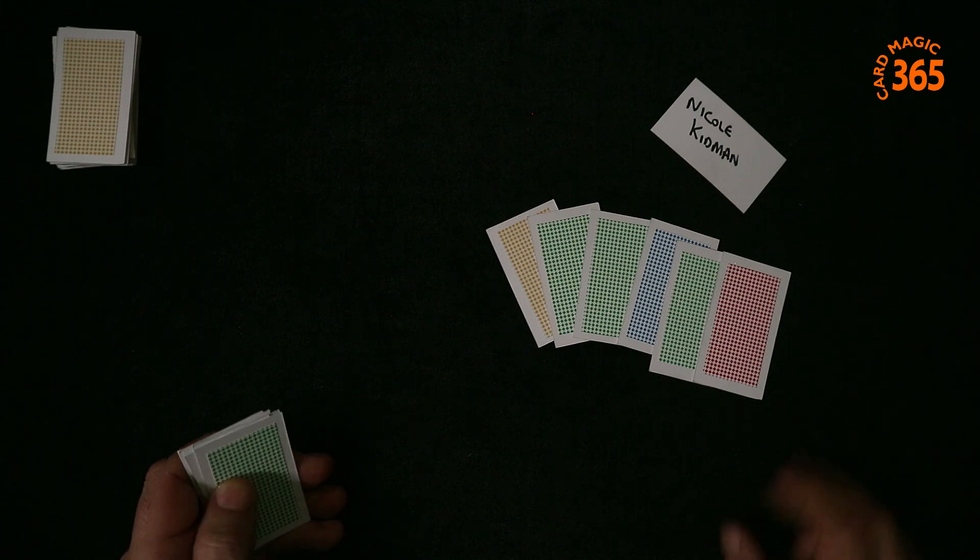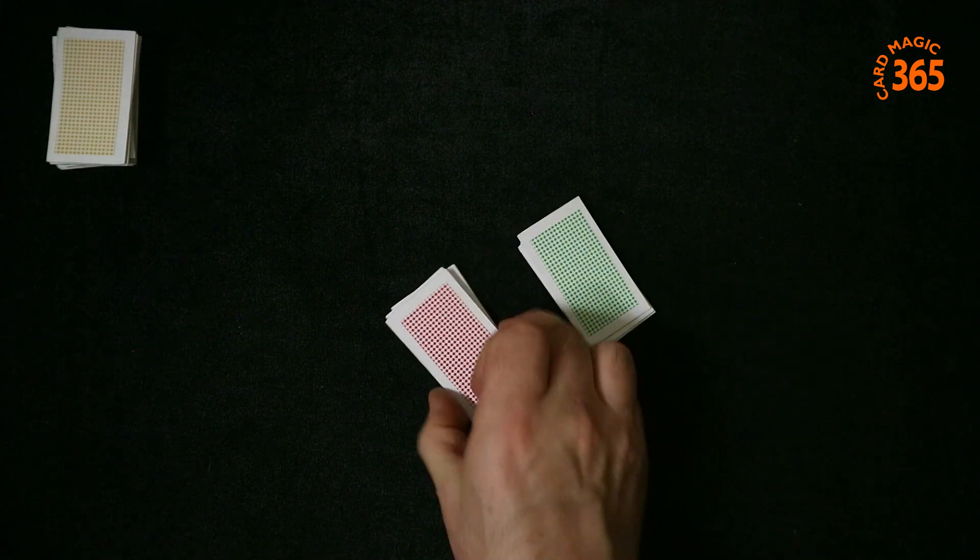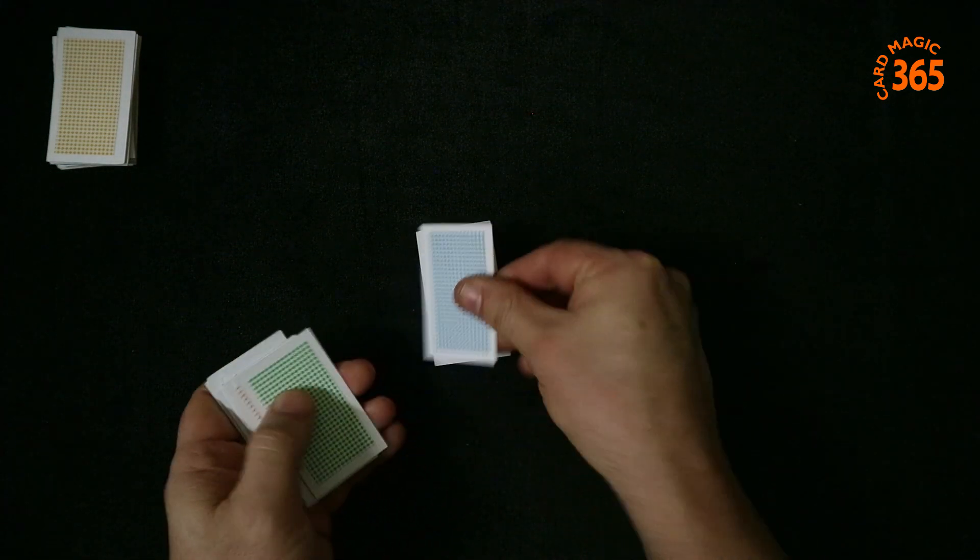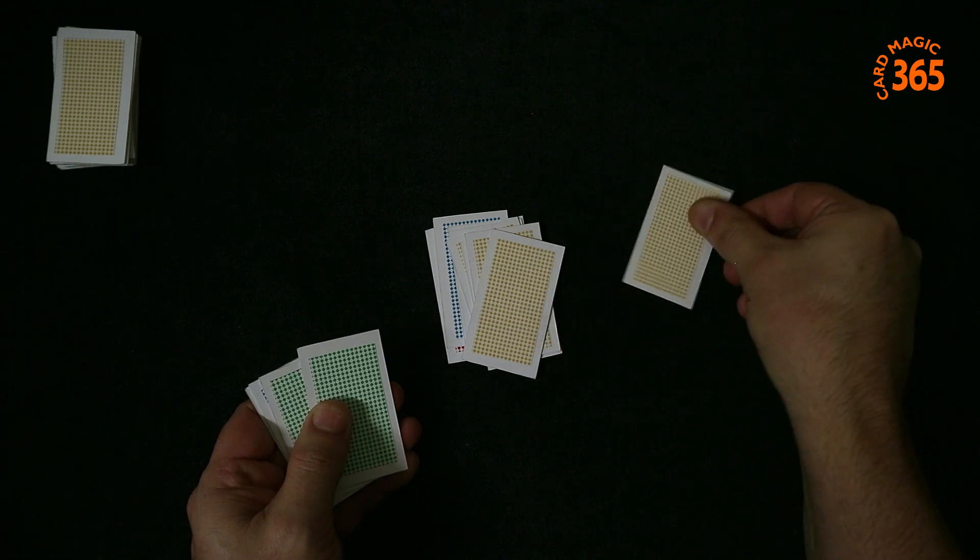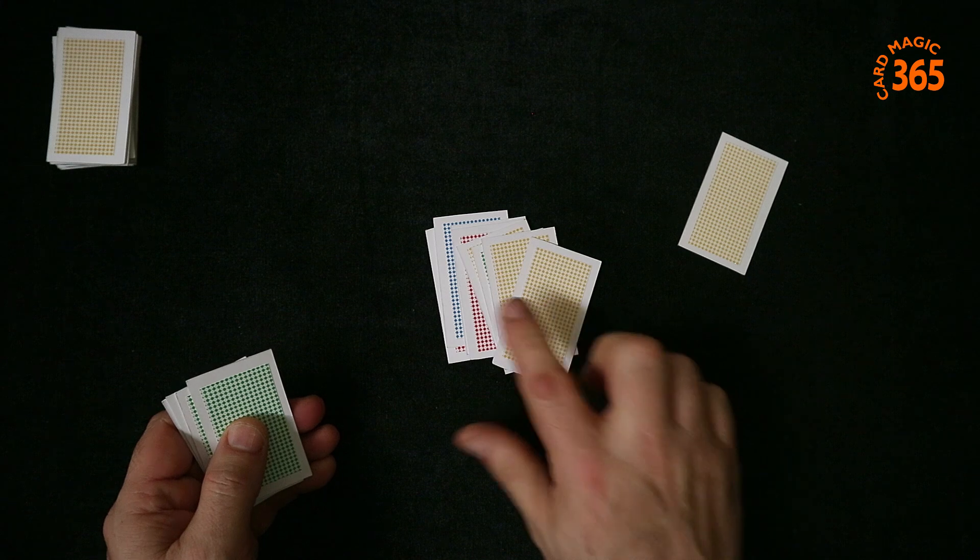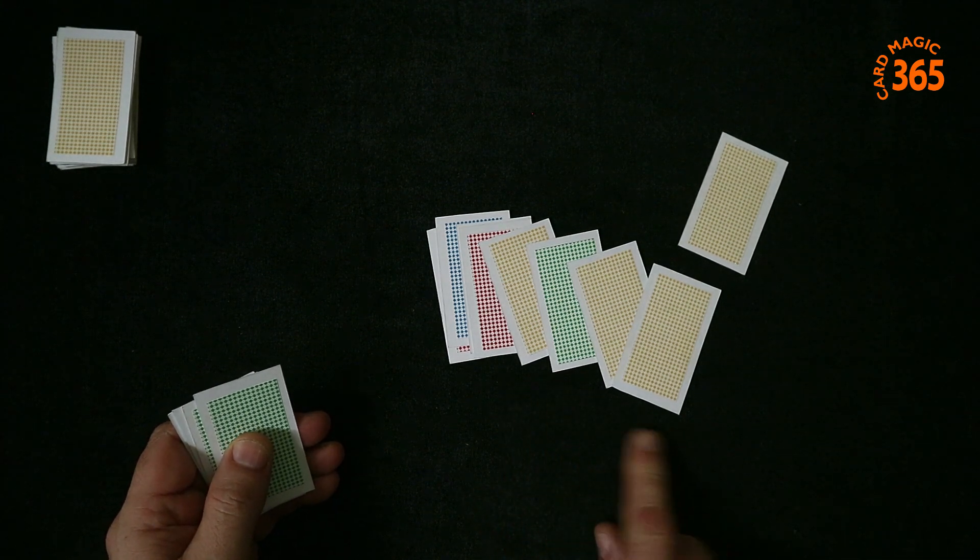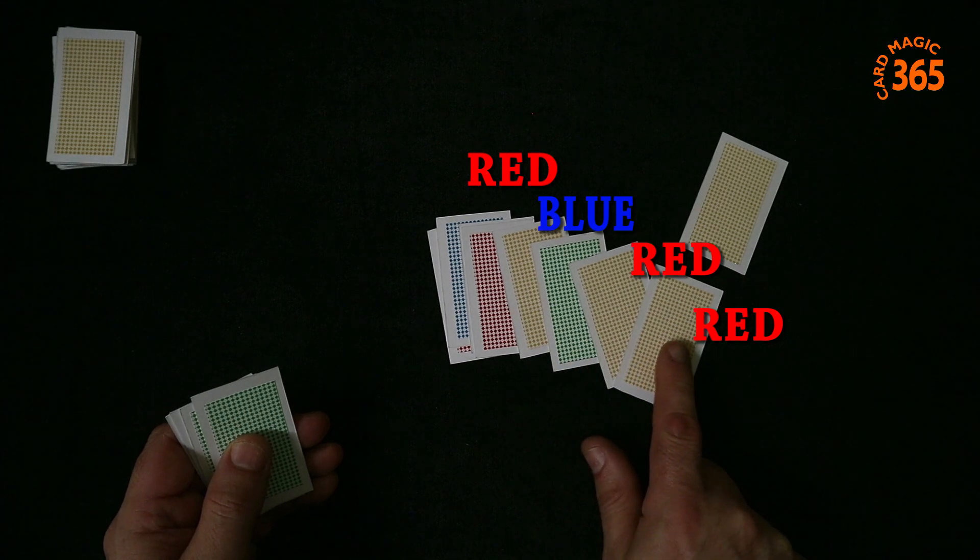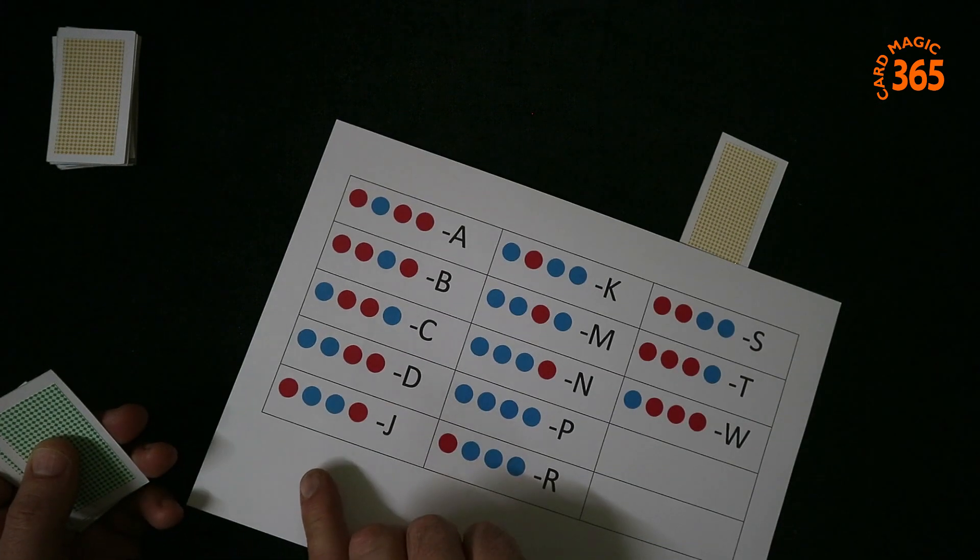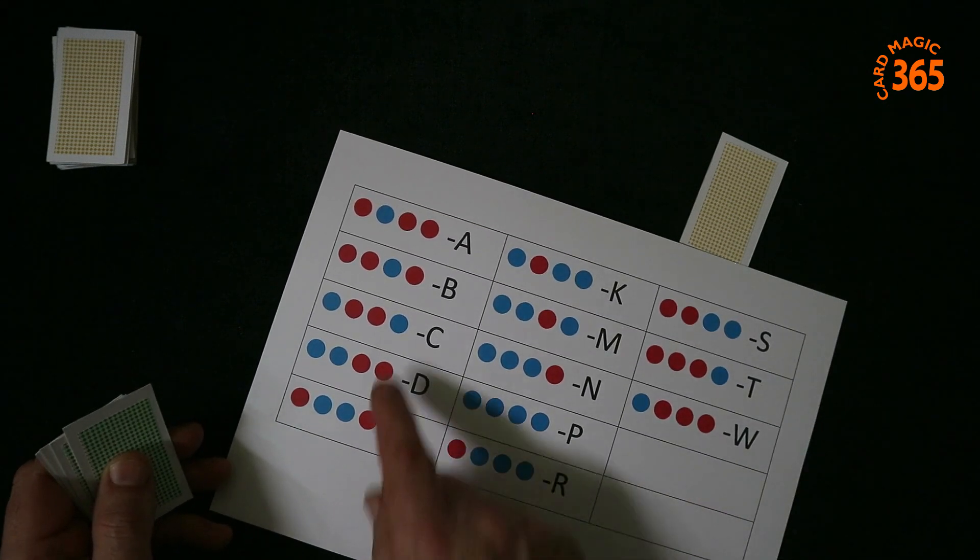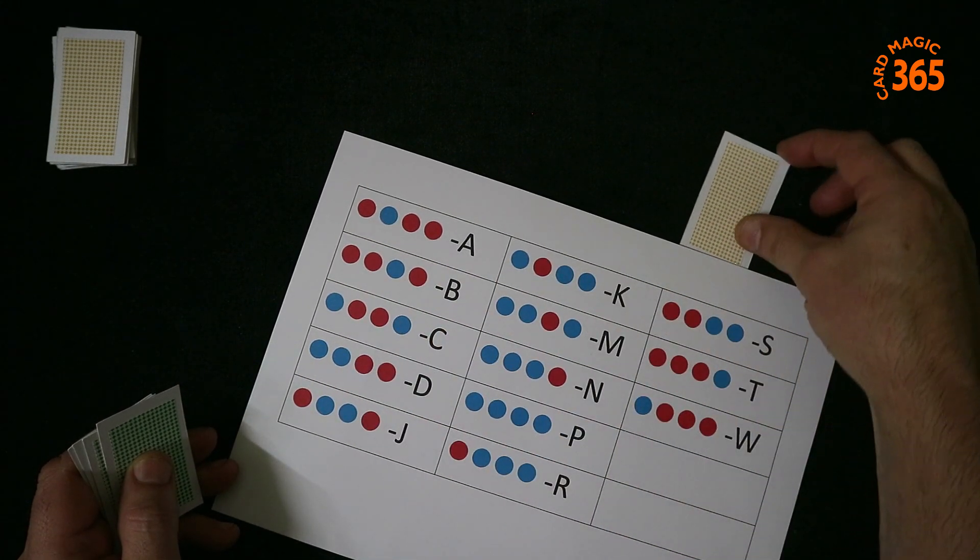Let me repeat this again. The spectator has dealt 13 cards. They can cut these if they so wish. They deal out cards and stop whenever they want. This is an absolute free choice here. So say they stop here and they put that to one side. Remember as a magician you're just interested in the last four colors dealt. When I look at this I see red, blue, red, red. If we look at our secret codes, red, blue, red, red is the letter A. That tells me this card is Al Pacino.